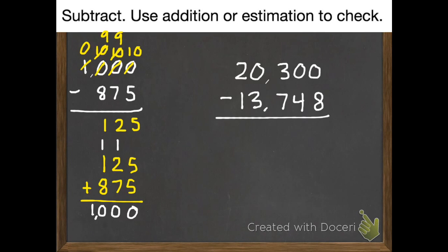Second practice problem. We need to borrow. We don't have any tens, so we borrow from our hundreds. Nope. That last one matches up, which is good. So now the next problem.